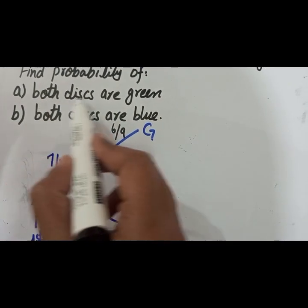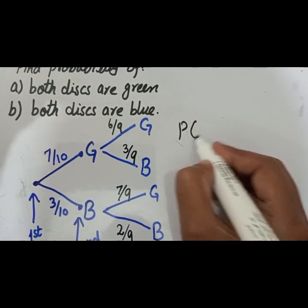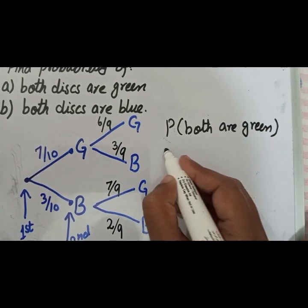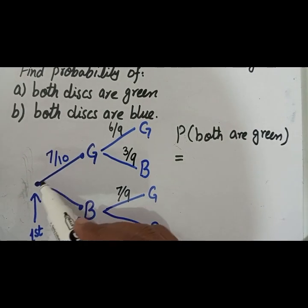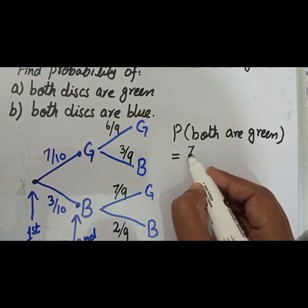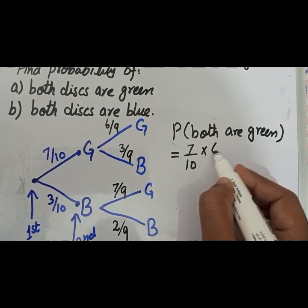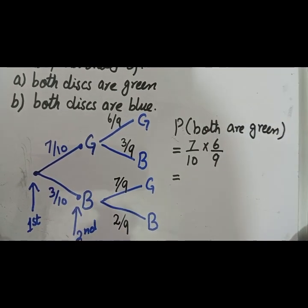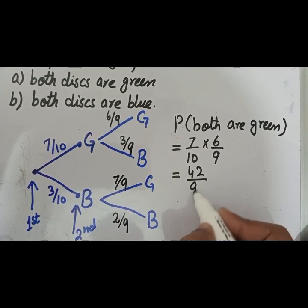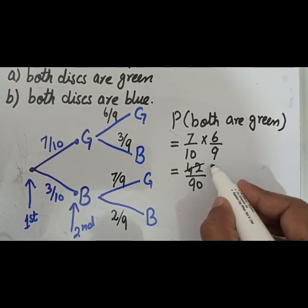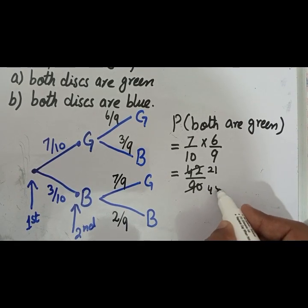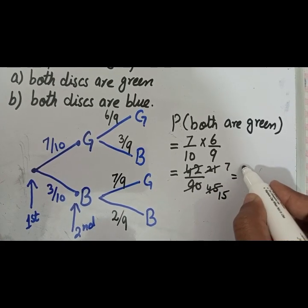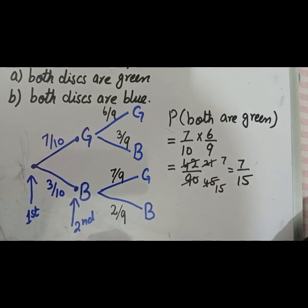Now, for the probability that both discs are green: multiply 7/10 by 6/9 to get 42/90. Simplifying by dividing by six gives 7/15. So the probability that both discs are green is 7/15.